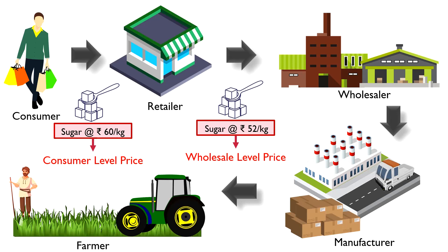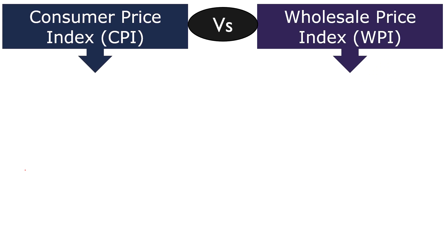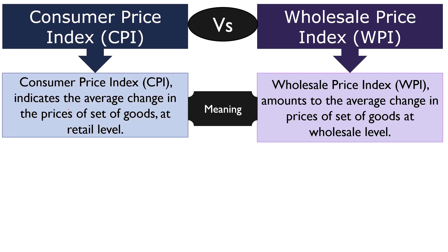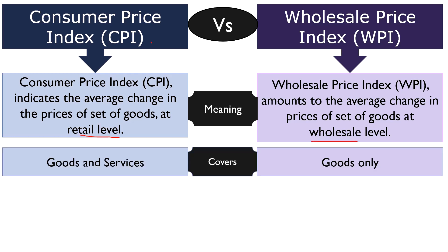Now we will look into the differences between consumer price index and wholesale price index. Consumer price index is an indicator of average change in the prices of set of goods at retail level, i.e. consumer level. On the other hand, wholesale price index amounts to the average change in the prices of set of goods at wholesale level, while consumer price index includes change in the prices of both essential goods and services in the imaginary basket of goods, whereas wholesale price index covers changes in the prices of only goods in the imaginary basket of goods.